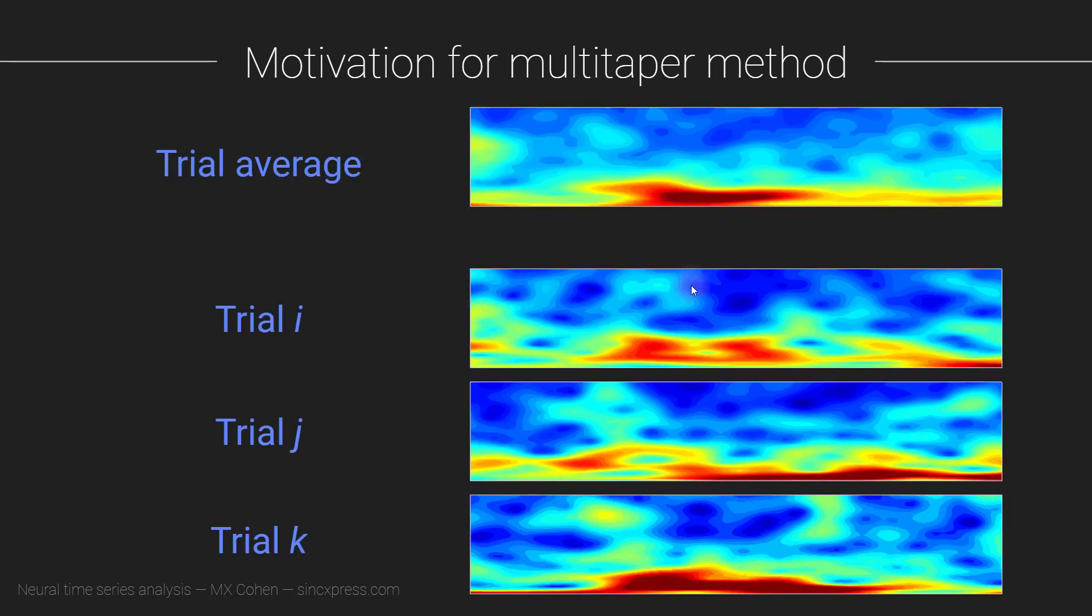So here's another diagram that I'm going to use to motivate the multi-taper method. So here is a trial average time frequency plot. Now I haven't labeled the frequency axis with particular numbers because that doesn't really matter. Here are individual trials.